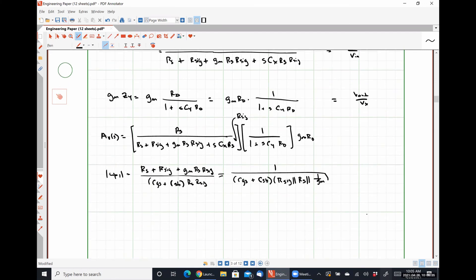And our second pole is a little bit easier. Omega P2 is just going to be one over CY RD. So that's one over CGD plus CDB times RD. No zero anywhere. So we have fully analyzed this.